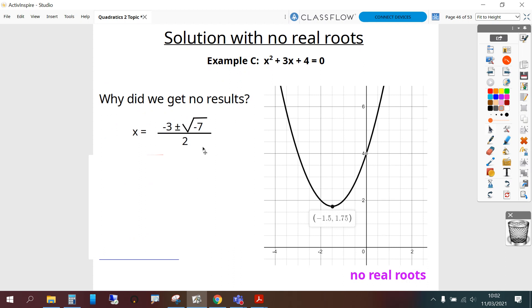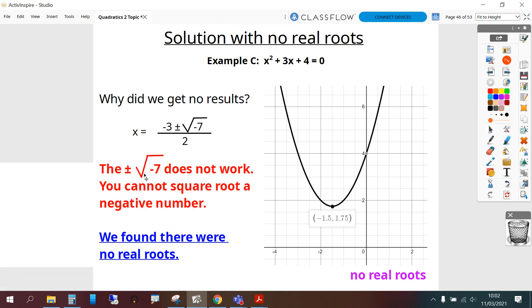Why did we get no results? Plus or minus square root of negative 7 does not work. You cannot square root a negative number. So we found no real roots. You can see on the graph there that there's not any points where the parabola touches the x-axis. So we say there's no real roots.